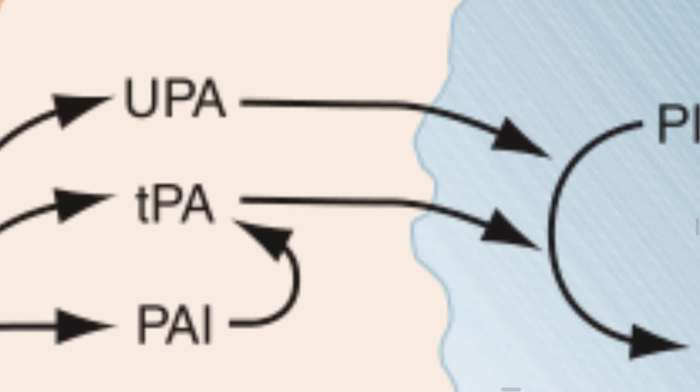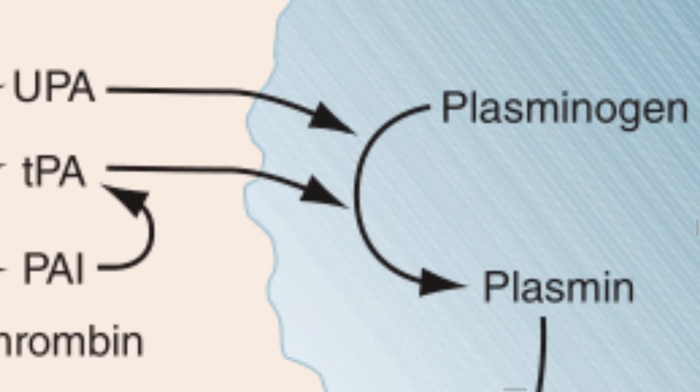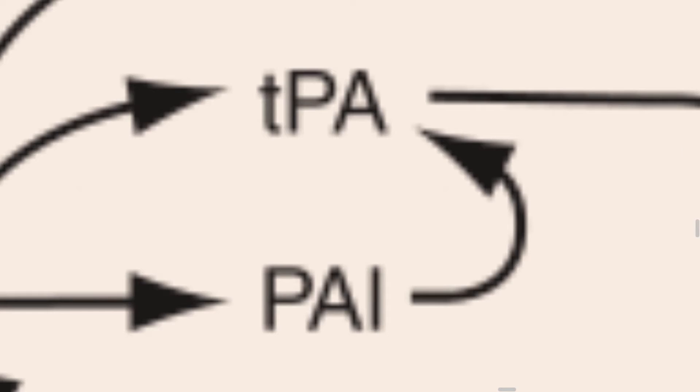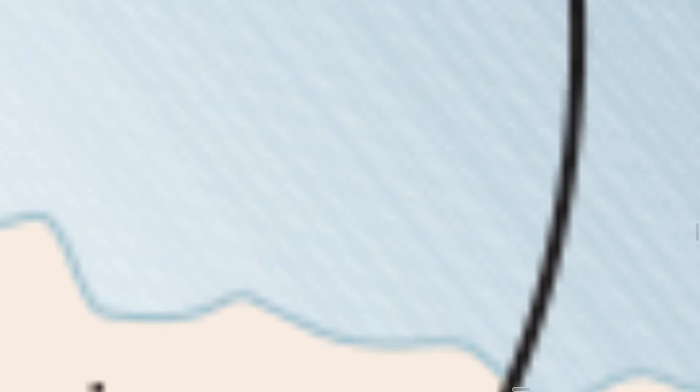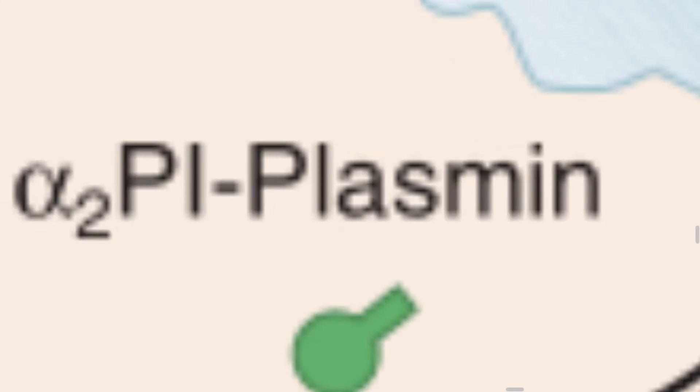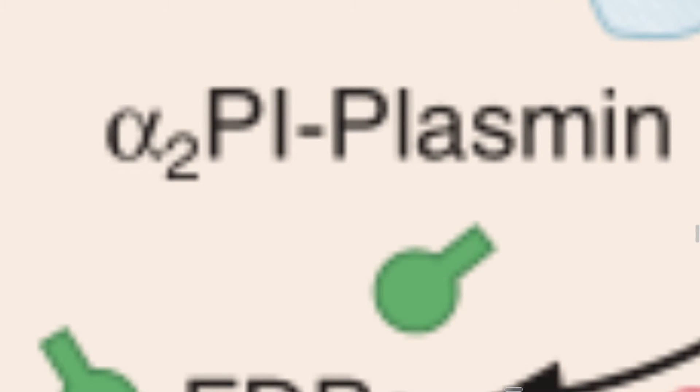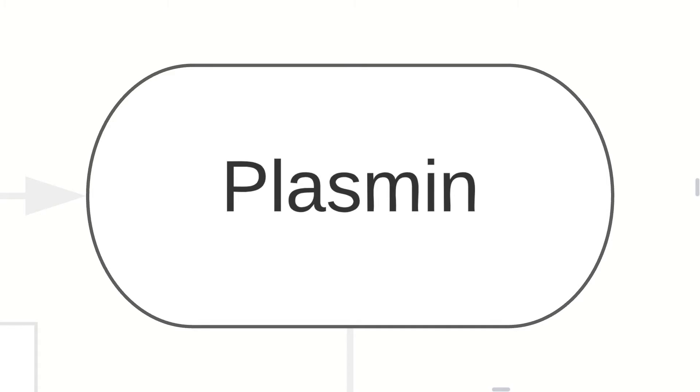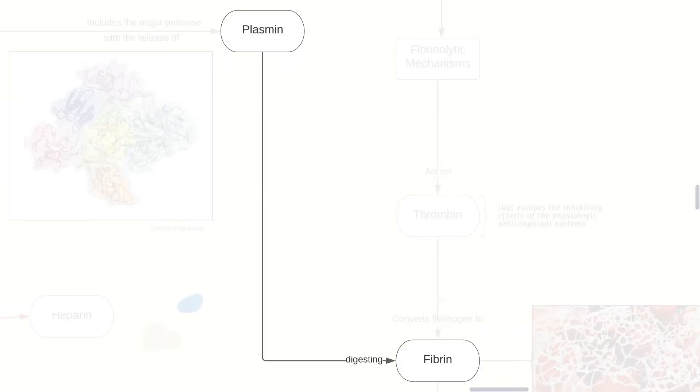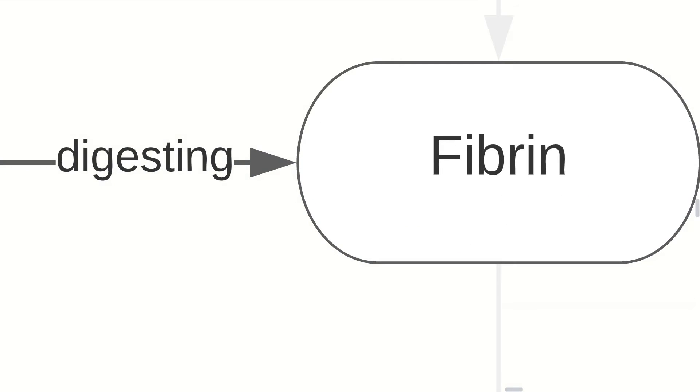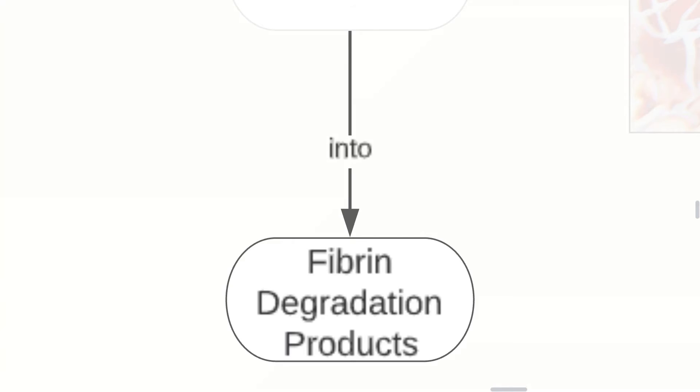So we start with urokinase-type plasminogen activator and tissue plasminogen activator, both of which convert plasminogen to plasmin. Our plasminogen activator inhibitor inhibits our tissue plasminogen activator. These are fibrin degradation products, also known as FDPs. Any plasmin is complexed with alpha-2-antiplasmin. In order to simplify things, plasmin is essentially digesting fibrin in order to produce fibrin degradation products.